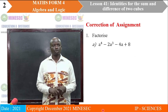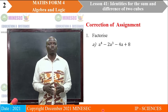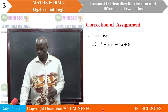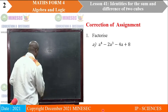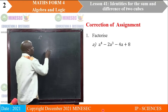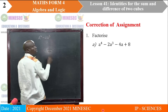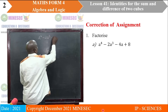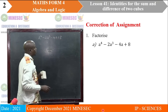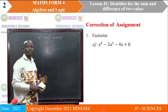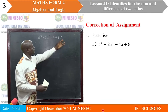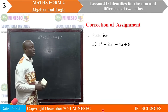Here is the first question: factorize A to the power 4 minus 2A cubed minus 4A plus 8. To factorize that expression by grouping: A to the power 4 minus 2A cubed minus 4A plus 8. We said that when we are factorizing by grouping, we have to factorize the first two terms and then factorize the next two terms, taking each pair at a time.